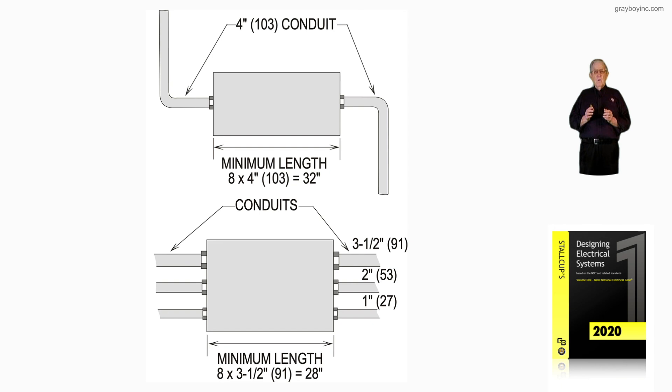So we're looking at a straight pull here, and that's what this figure is illustrating, a straight pull based upon eight times the largest conduit coming into the box on either wall.